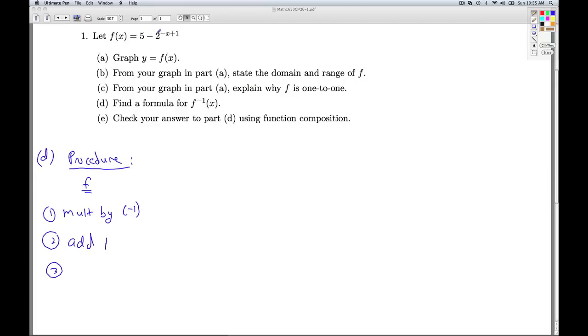Then it puts that into the function 2 to the x, so it makes it the exponent on 2. Then it multiplies that by negative 1. And then it adds 5.